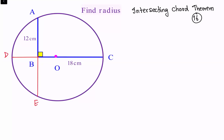By the chord intersecting theorem we know that BA times BE — that's the product of the two parts of one chord — equals the product of the two parts of the other chord, which is BD times BC.